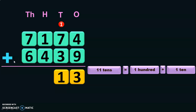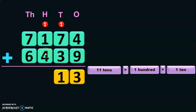Next, add the digits in the hundreds place: 1 plus 1 is 2, and 2 plus 4 is 6. Next, move on to the thousands place to add the digits.